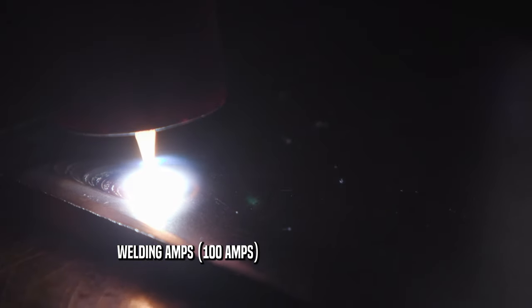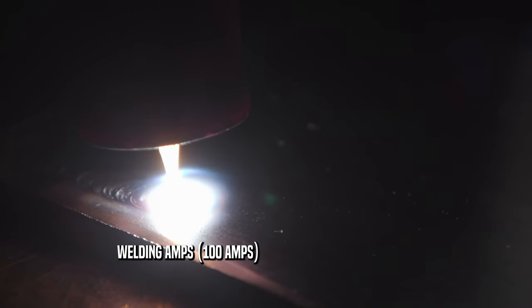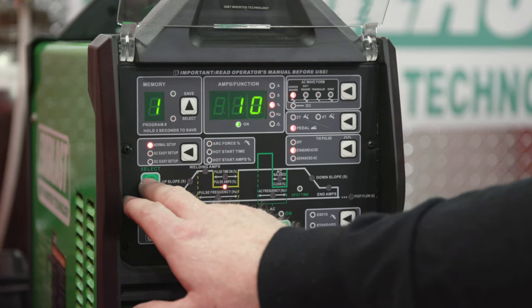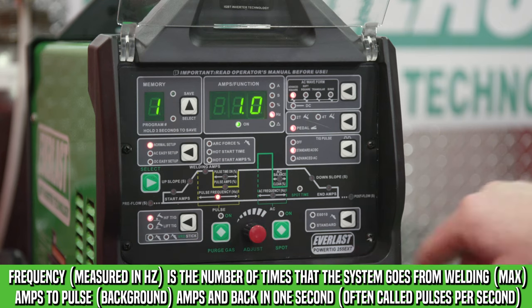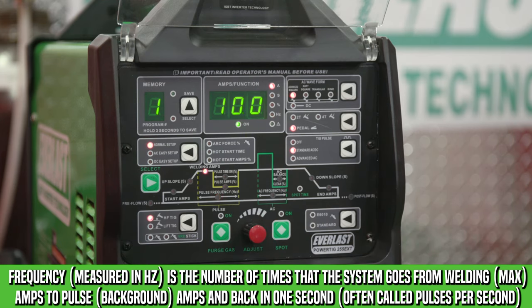So when it's on, it'll be 100 amps. When it's off in its background phase, it'll be 10 amps. And next we'll set up that frequency. And so that's how often per second are we going to do this. And we'll leave that at one, one pulse per second.